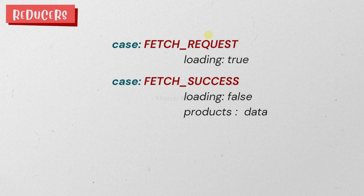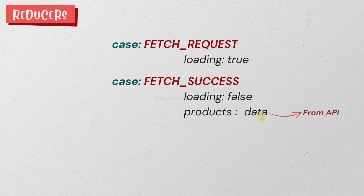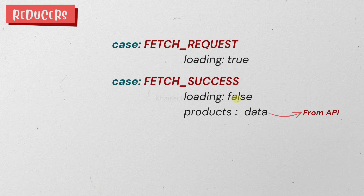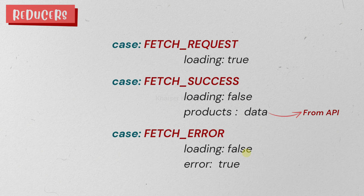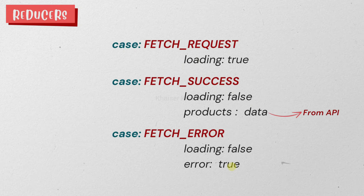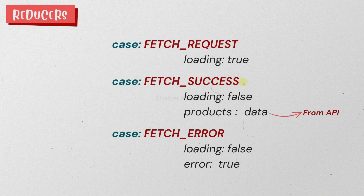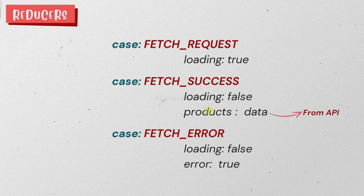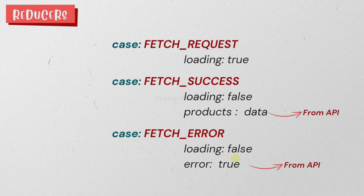For 'fetch success', if the data was fetched successfully, we assign the products property the value of the data received from the API, and set loading to false. If we encounter an error while fetching the data, we set loading to false — we don't want to show the spinner — and instead set error to true. At that point, we display an error message to the user. So: on request, loading is true; on success, loading is false and products gets the API data; on error, loading is false and error is true, and we display the error message.